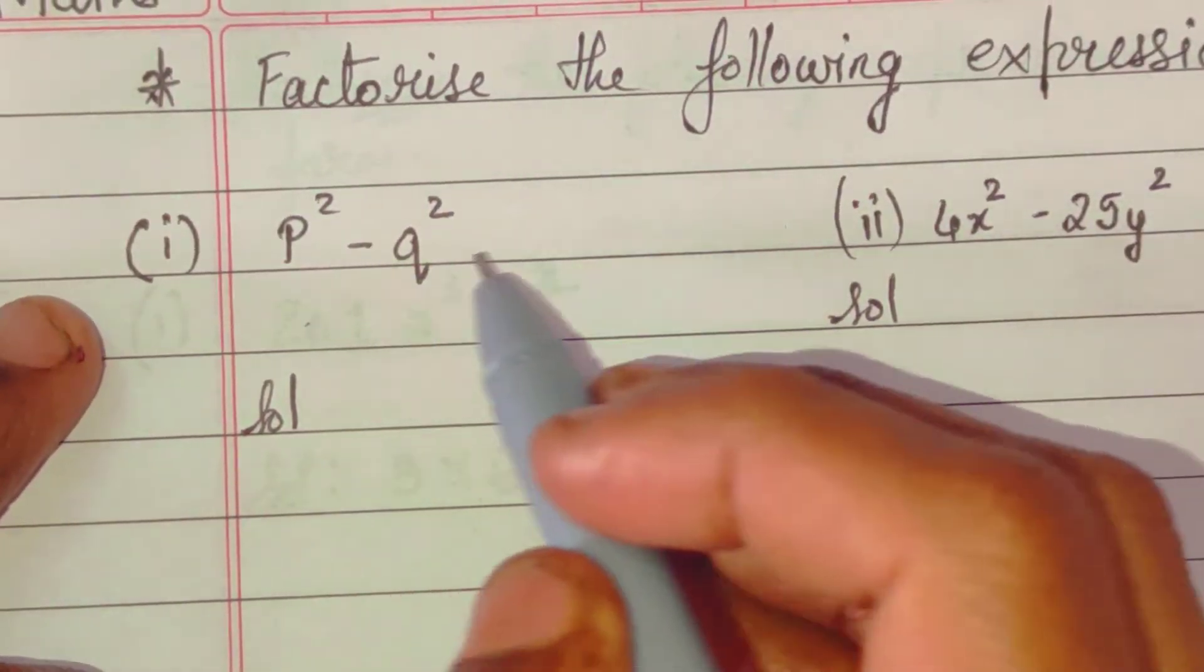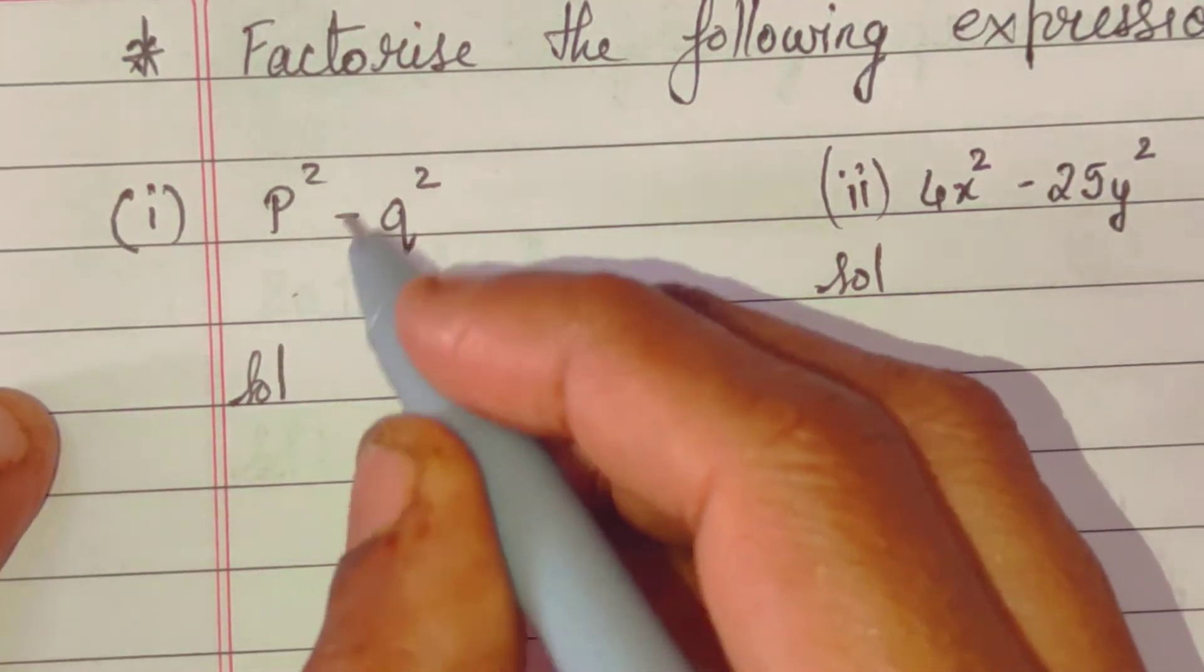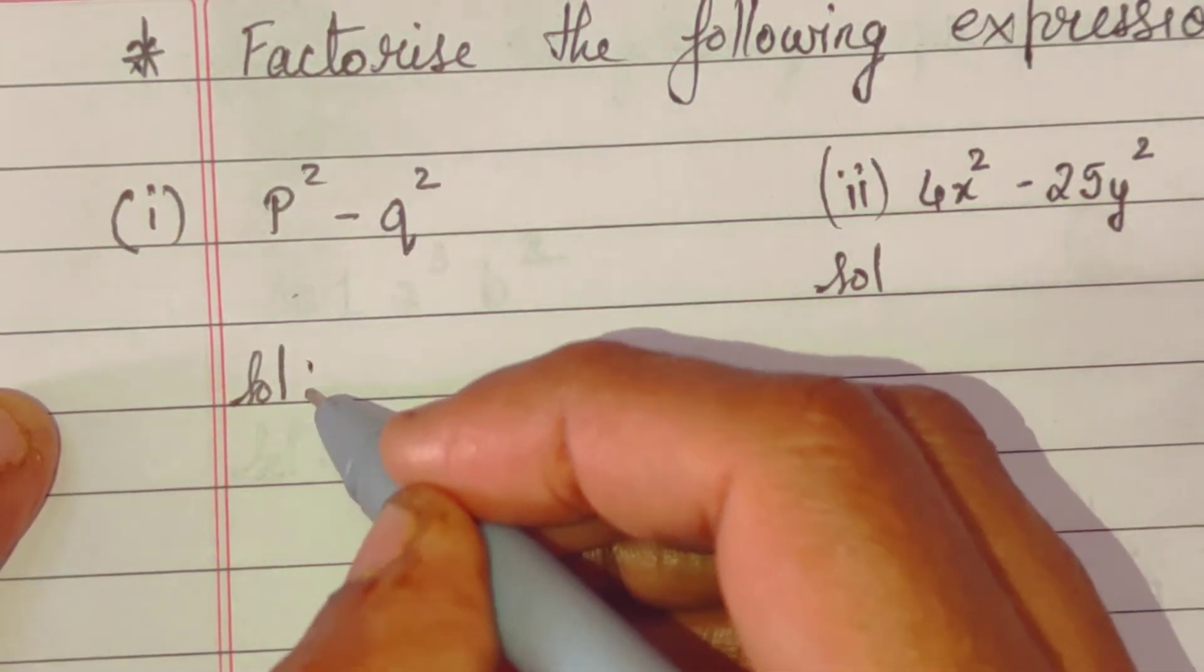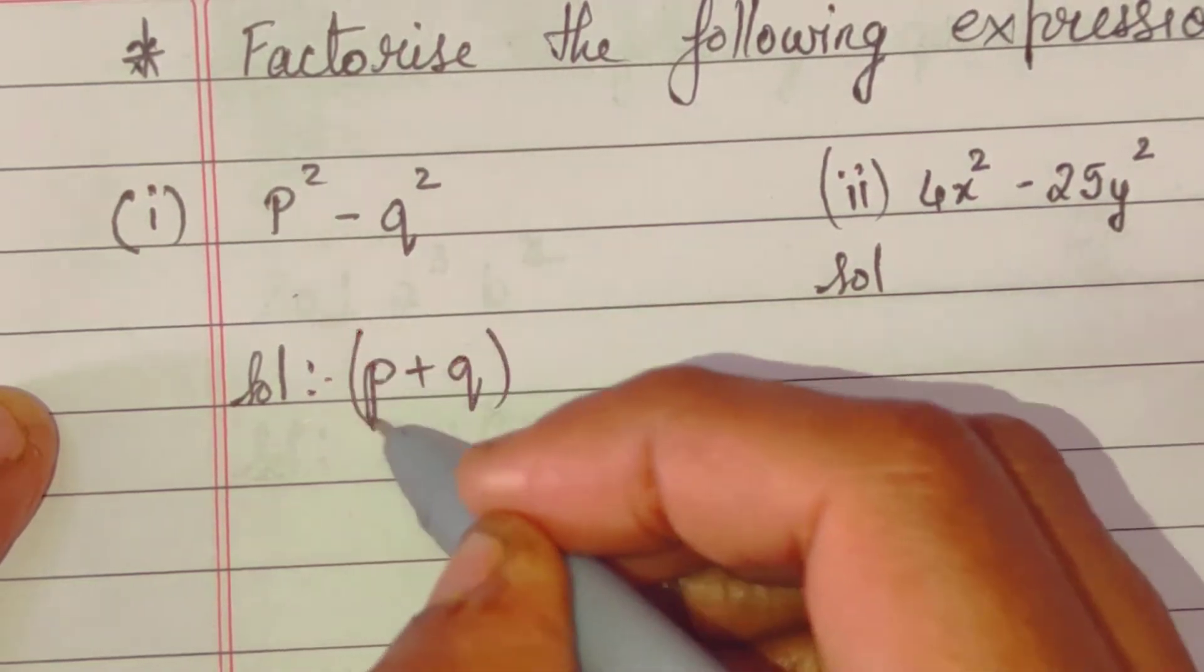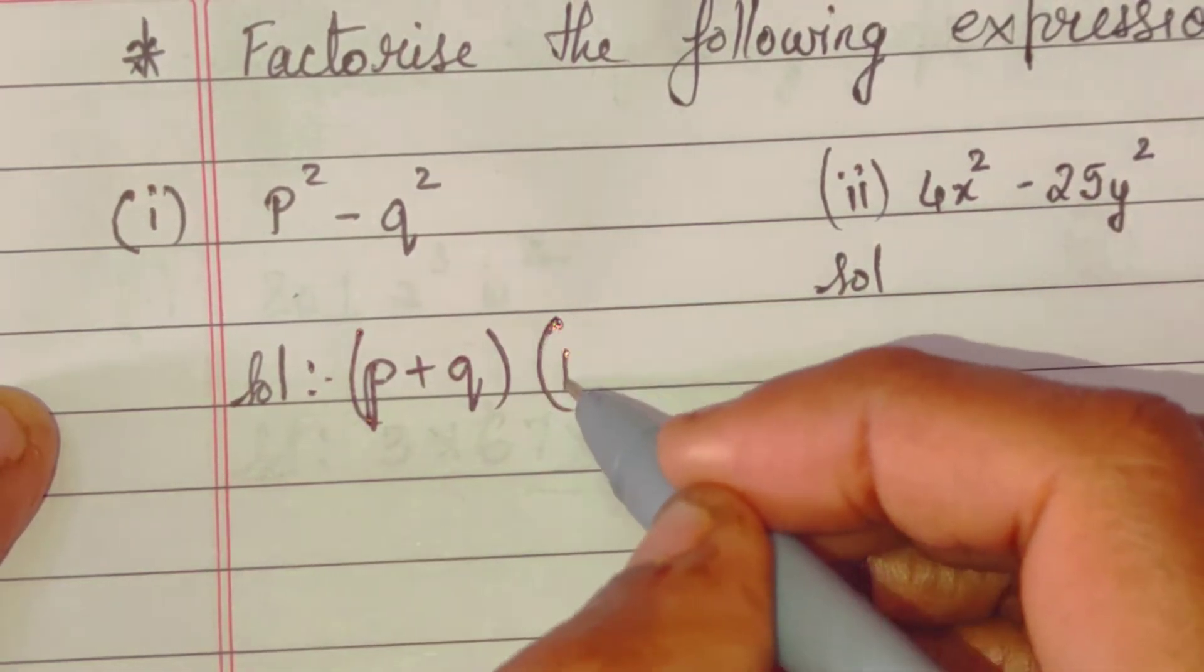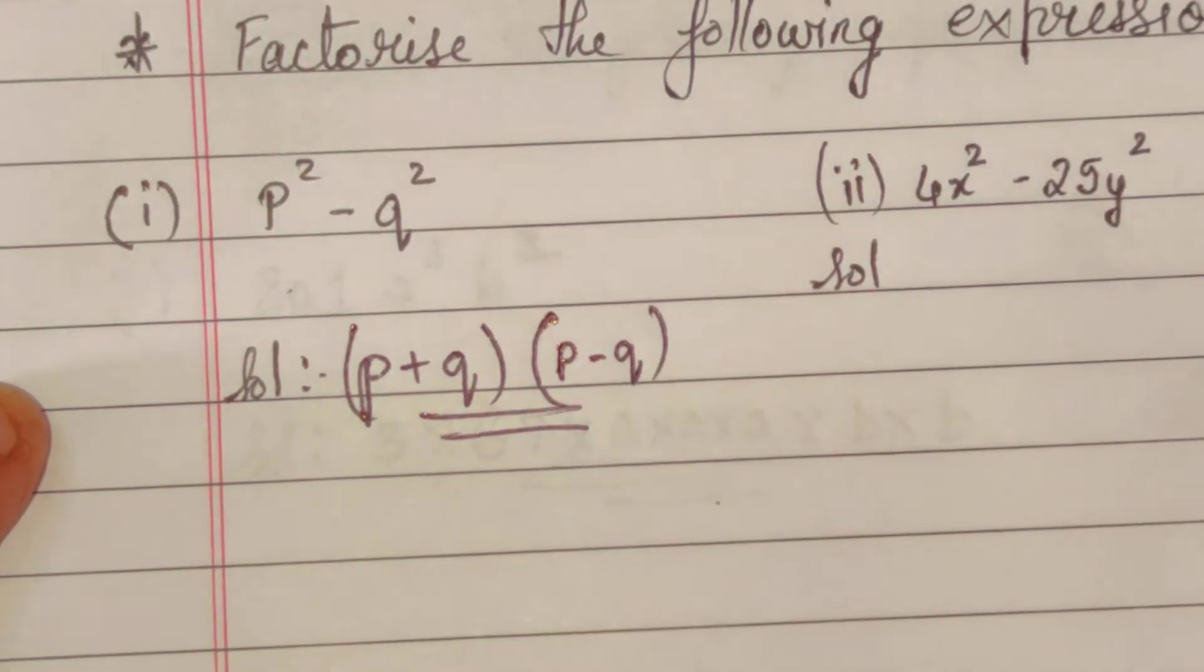P square minus Q square. This is the reverse formula. We have to write one time in plus, P plus Q, then multiply by P minus Q. This is the solution. Done.